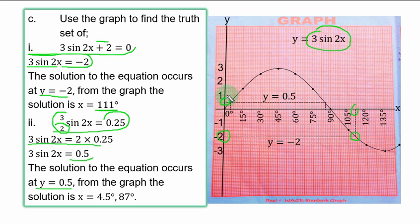So you trace to meet the curve at all possible points. One point is here, another point is here. If you trace the first point to the x-axis, noting that one line is 1.5°, you have 4.5°. And for the second point, if you count from 75° to where the line falls in, you have 87°. So the truth set of that equation is x = 4.5° and 87°.